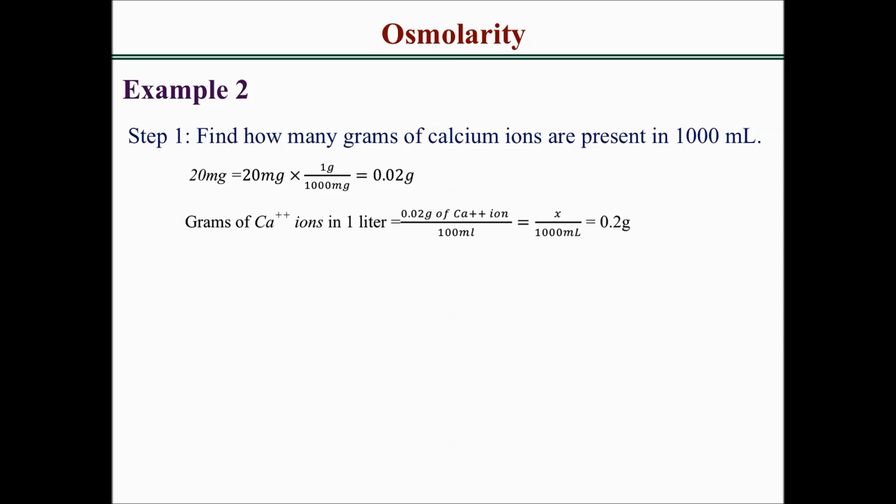Our next step is to find the grams of calcium ions that are present in 1000 mL. We have to set up a proportion by writing grams of calcium 2+ ions in 1 liter equals 0.02 g of calcium ion over 100 mL equals x over 1000 mL. If the calculation is right, we should arrive at 0.2 g of calcium ions in 1000 mL.